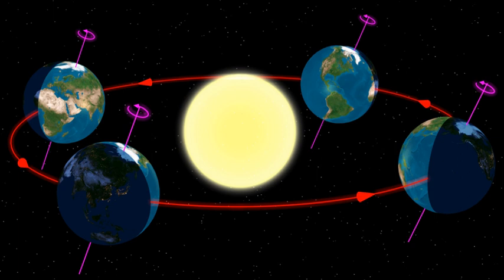As seen from Earth, the planet's orbital prograde motion makes the Sun appear to move with respect to other stars at a rate of about 1 degree eastward per solar day, or a Sun or Moon diameter every 12 hours.